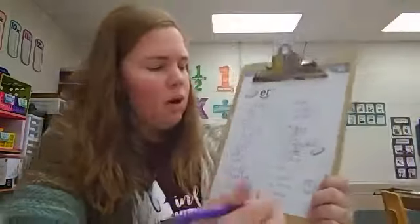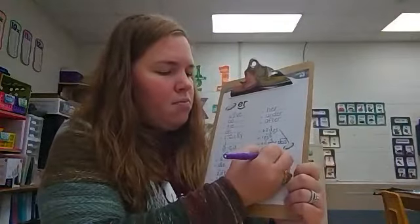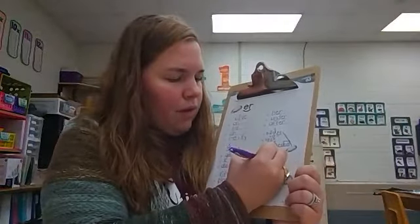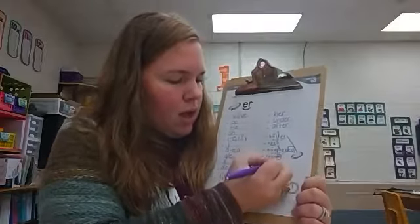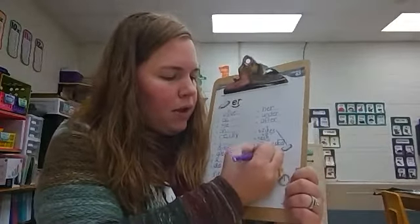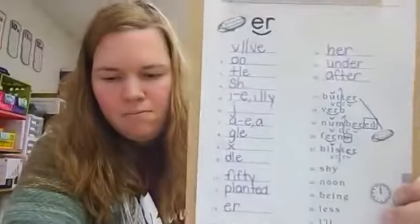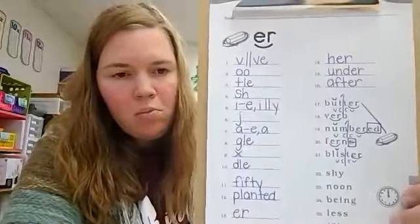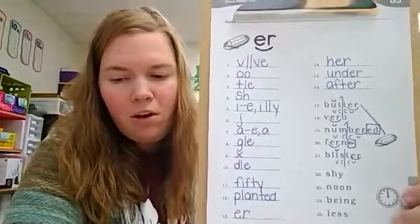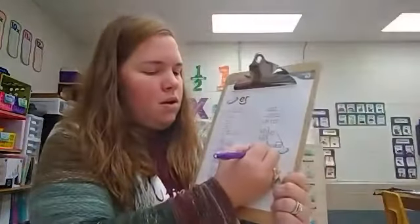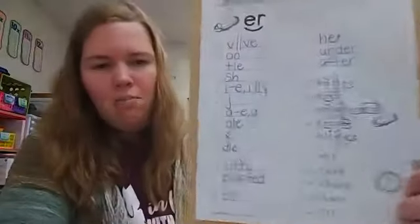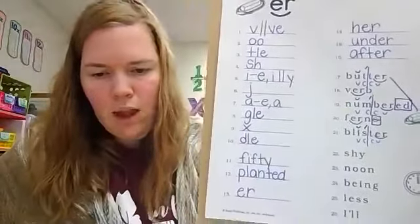And number 21, I see combination E-R. There is a vowel, consonant, consonant, vowel pattern in this word, too. A consonant follows the I, so we put a brevi. Which syllable is accented in blister? Blister. The first one, again, with an accent mark after the S.